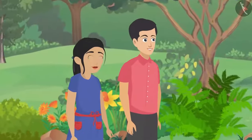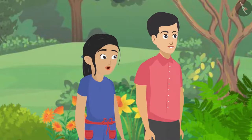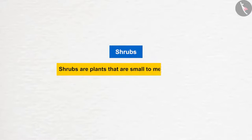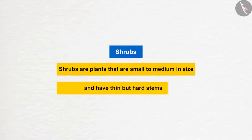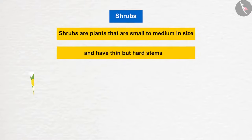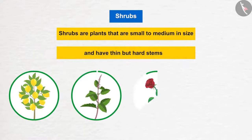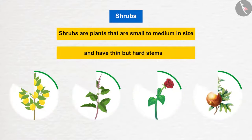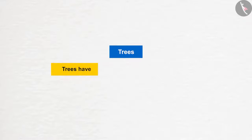Pushpa took her turn to explain shrubs. These plants are small to medium in size and have thin but hard stems, with branches that originate from near the ground. Lemon, basil, rose, and pomegranate are some examples of shrubs.